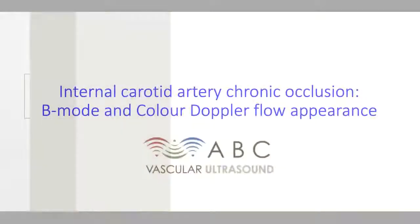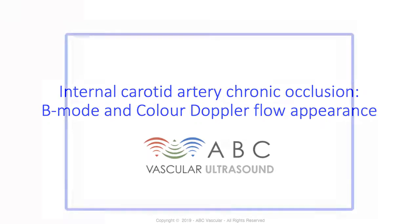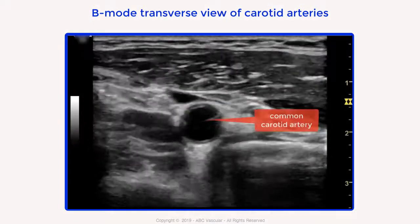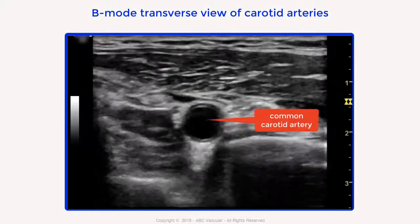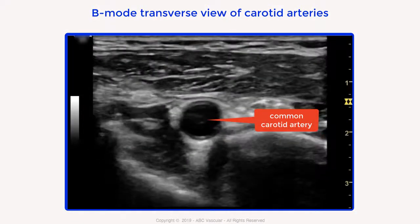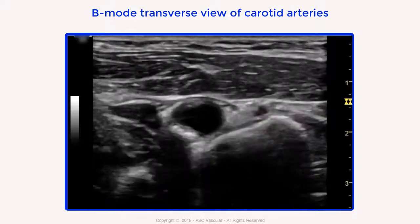Welcome to this ABC Vascular Ultrasound case study: internal carotid artery chronic occlusion — B-mode and color Doppler flow appearance. This is the B-mode transverse view of the common carotid artery, which presents an echo-free lumen.